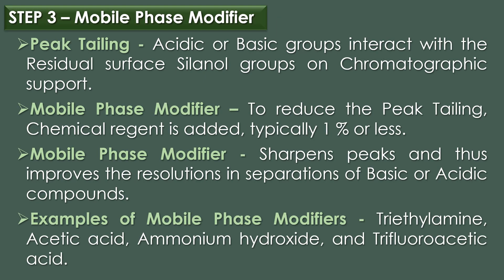The third step is the mobile phase modifier. When molecules have acidic or basic groups, they may interact with residual surface silanol groups on the chromatographic support, resulting in peak tailing, which is not desirable. To reduce peak tailing, a chemical reagent is added at a very low concentration, typically 1% or less — this is called a mobile phase modifier. Mobile phase modifiers sharpen the peaks and improve resolution in separations of basic or acidic compounds.